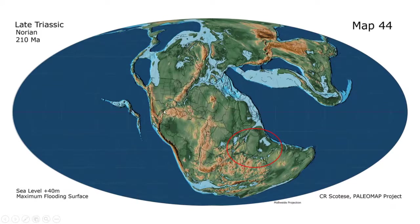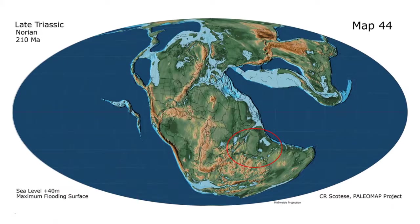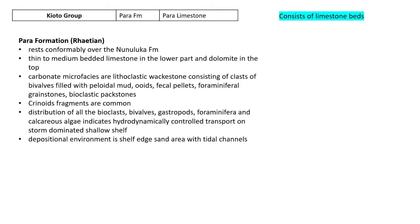In the Norian — the middle part of the late Triassic — the paleogeographic map shows that the sea had regressed significantly; this lowering of sea levels caused the prograding cycles and is evident from the map where the location of today's Spiti Valley shows falling water levels. The Kioto group, overlying the Lilang Supergroup, consists extensively of limestone beds and rests conformably over the Nunuluka formation, with thin to medium bedded limestone in the lower part and dolomite in the upper part.